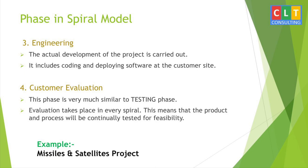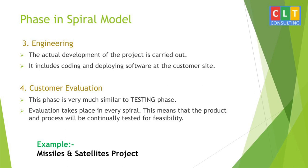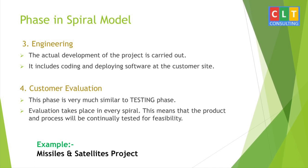The third phase is Engineering, where the actual development of the project is carried out. This phase includes testing, coding, and deploying the software at the customer site — it is the main phase of this model. The last phase is Customer Evaluation, which is similar to the testing phase. The developed product is passed to the customer in order to receive their comments and suggestions, and evaluations take place in every spiral.